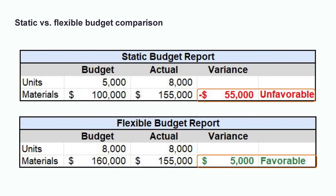If you look back at the previous example, a company using the static budget approach would have reported an unfavorable variance of $55,000. However, now using the flexible budget approach, we can see the company has managed their costs well and has actually spent $5,000 less than they planned. This is a much more effective way to measure the performance of this department.